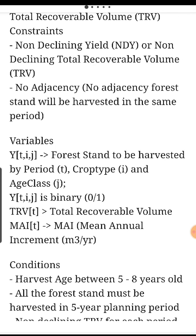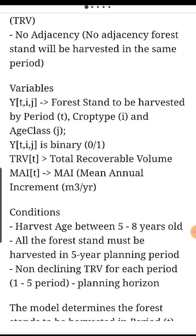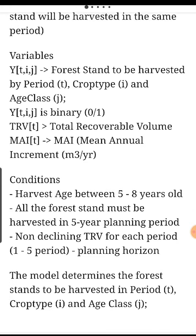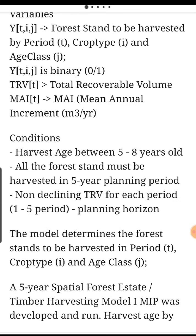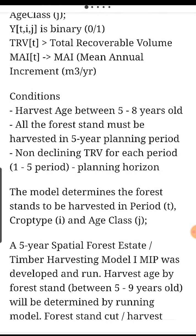No adjacency: no adjacent forest stands will be harvested in the same period. The variables: Y as a function of T, I, J — forest stands to be harvested by period T, crop type I, and age class J. Y(T,I,J) is binary, 0 and 1 only. TRV as a function of T is total recoverable volume. MAI as a function of T is mean annual increment in cubic meters per year.